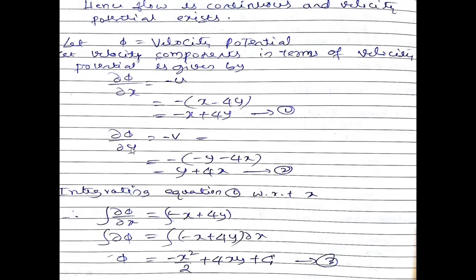Similarly, the velocity component in the y direction gives: ∂φ/∂y = -v = -(-y - 4x) = y + 4x. This is equation number two. So we have two equations: equation 1: ∂φ/∂x = -x + 4y, and equation 2: ∂φ/∂y = y + 4x.